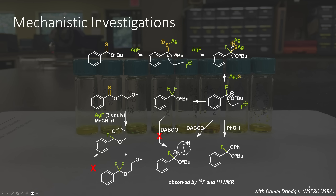This results in the formation of a fluorooxonium, also called an oxocarbonium, which can be attacked by a fluoride anion, giving us the difluoroether. We were also able to trap this carbocation with two different nucleophiles, including phenol and DABCO, and we were able to observe these adducts by 19F and 1H NMR.